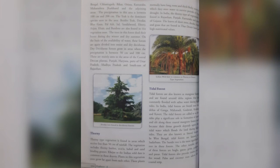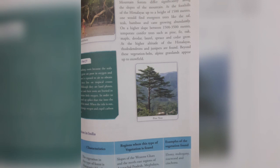Then we have the mountain forest, found in mountain regions. The chief feature of the mountain forest is that with varying height, the species of trees also change. At the foothills, evergreen trees like bamboo and cane are found. At higher slopes of 1,500 to 3,500 meters, conifer forests are found. At even higher altitudes, snow fields begin, and beyond the tree line only mosses and lichens grow.